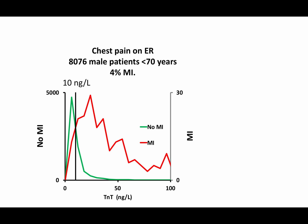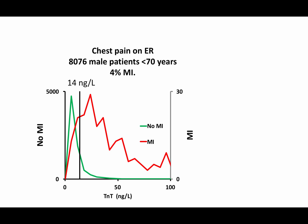This frequency plot shows baseline Troponin T-levels against two y-axes. Patients without myocardial infarction are shown in green and plotted against the left y-axis. Patients with myocardial infarction are shown in red and plotted against the right y-axis. The black vertical line is the ROC-optimized cutoff in this cohort at Troponin T-levels of 10 nanograms per liter. The Troponin T-level is, according to current guidelines, defined as the level that 99% of healthy individuals lie below — the 99th Troponin T-percentile — which is 14 nanograms per liter according to several well-done studies.